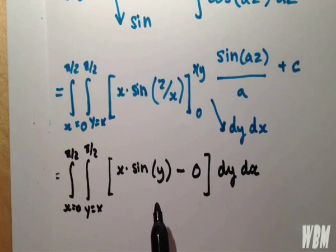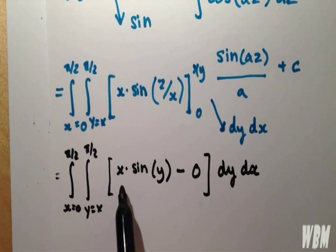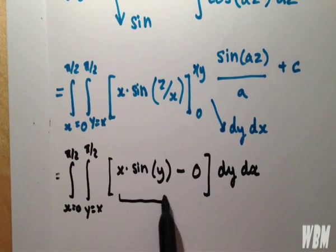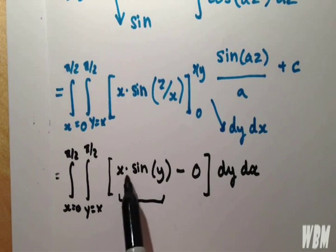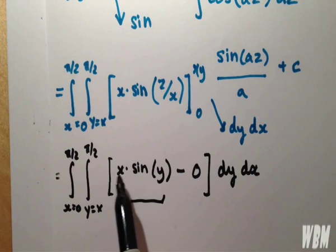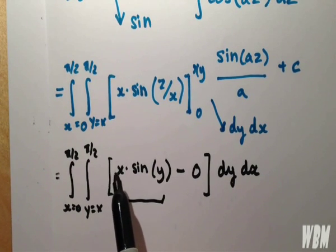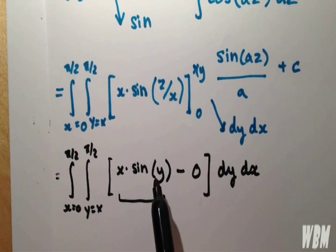So, the first step's done, it's complete. Now we need to worry about integrating x sine y with respect to y. Now this is easier than it looks. Once again, we're not integrating with respect to x, so that becomes like a coefficient term, so we can disregard the x and worry about sine y.